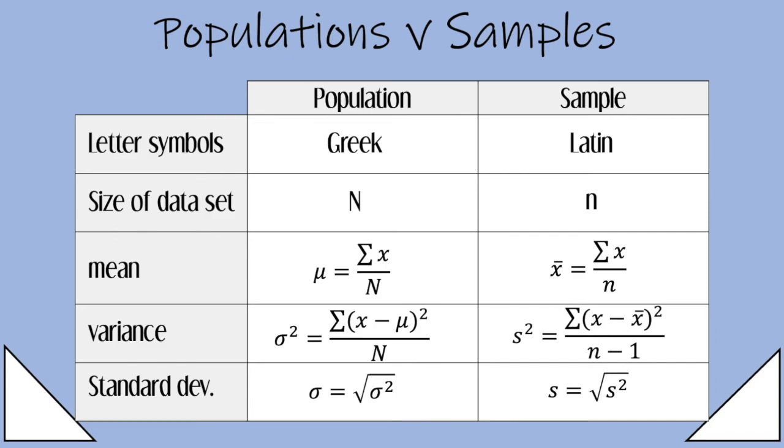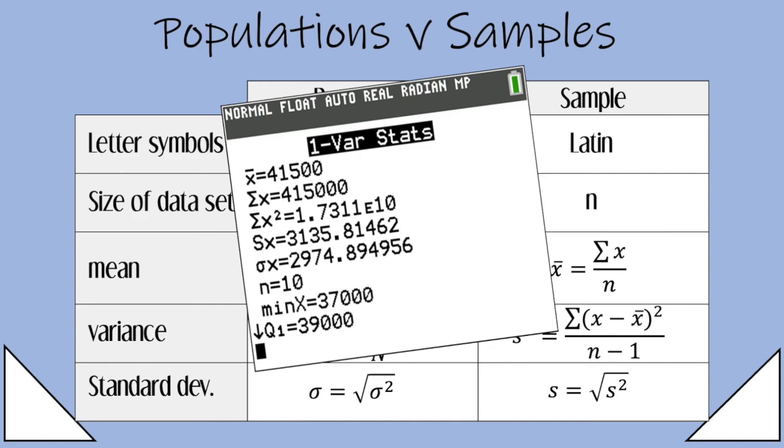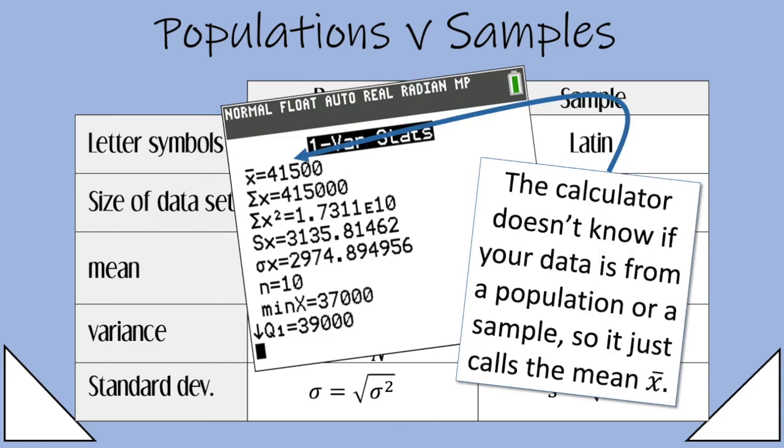Let's look at how this shows up on the calculator. Let's say you put in a list of numbers into your TI-83 or 84, and then you ask it to calculate the one variable stats. You'll come up with something that looks like this. Now the calculator doesn't know if your data is from a population or from a sample.